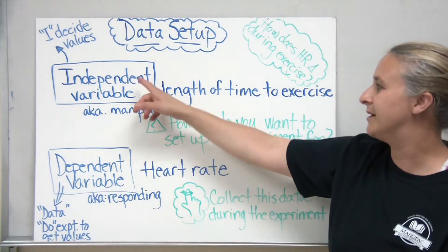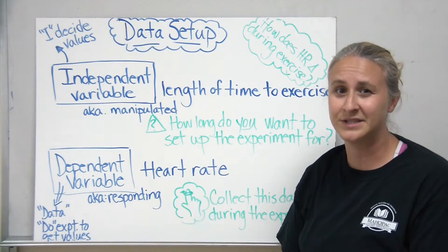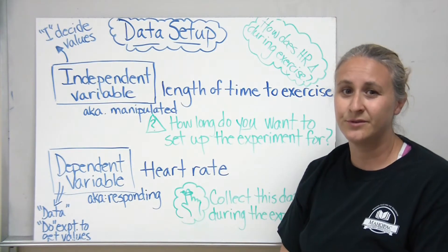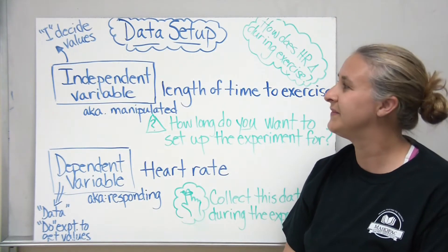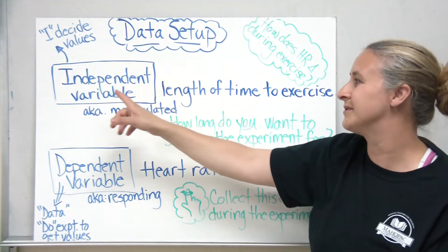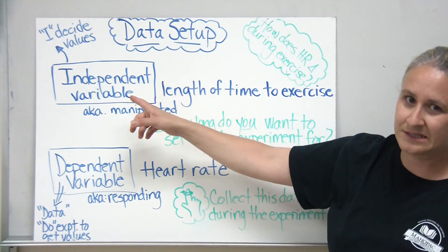In order to organize our data, we need to determine our independent and our dependent variables. Usually I like to use some clues to remember the difference between them. I like to look at the I in independent and say I decide those values. So it's what the researcher has decided.